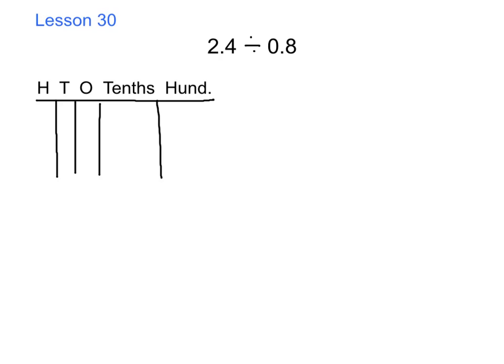This is Problem 1 from homework: 2 and 4 tenths divided by 8 tenths. The first thing we're going to do is turn this into a fraction — 2 and 4 tenths divided by 8 tenths.